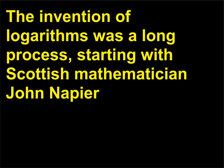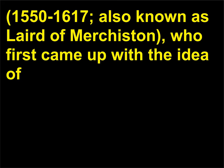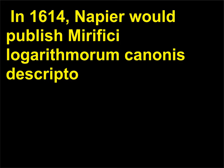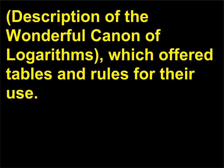The invention of logarithms was a long process, starting with Scottish mathematician John Napier (1550–1617), also known as Laird of Murchiston, who first came up with the idea of logarithms in 1594. But the actual invention and announcement of logarithms would take another 20 years. In 1614, Napier published Mirifici Logarithmorum Canonis Descriptio — Description of the Wonderful Canon of Logarithms — which offered tables and rules for their use.